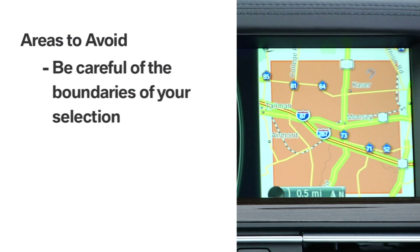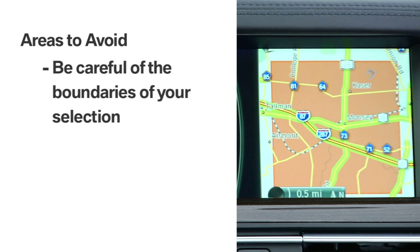When programming areas to avoid, be careful about the boundaries of your selection. For example, if you accidentally include a highway on the edge of your selection, the navigation system may route you off of the highway when that wasn't your intention.